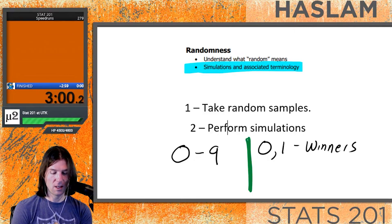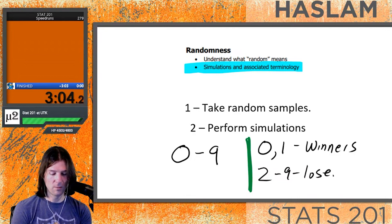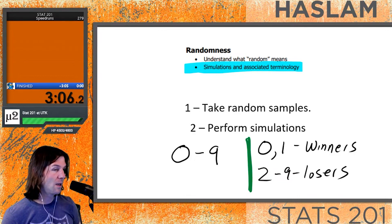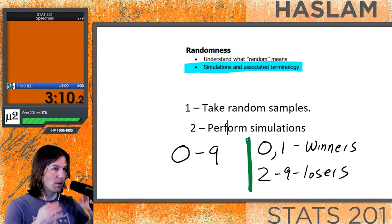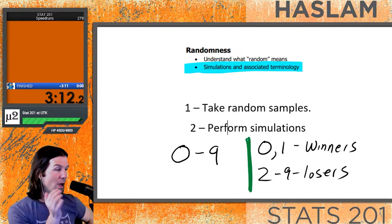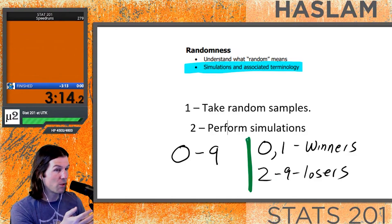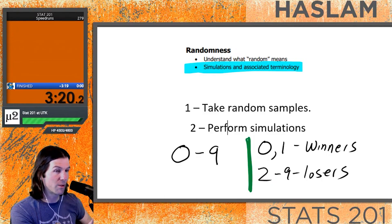Zero and one is going to be winners, and two through nine is going to be losers, meaning we don't win on the lottery ticket. The way the simulation is created, we have a 20% chance of winning with any random number that is generated.